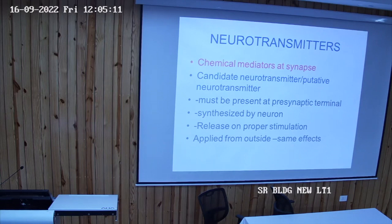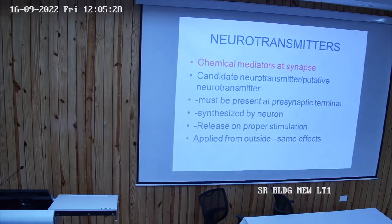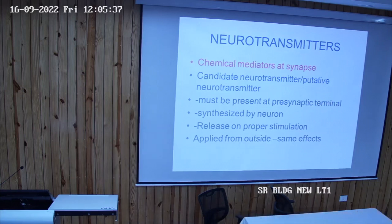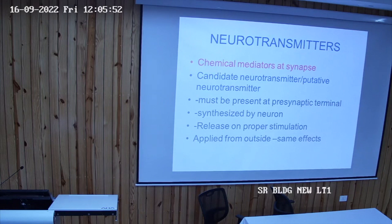These are known as putative or candidate neurotransmitters. What must they have? First, the substance must be present at the pre-synaptic terminal. Second, the synthetic machinery for the synthesis of that neurotransmitter must be present in the same neuron.